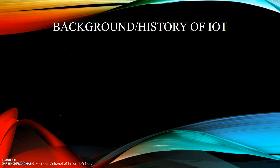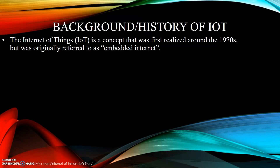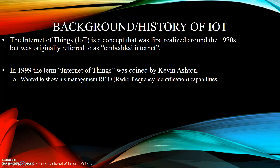Background or History of IoT Technology. The Internet of Things is a concept that was first realized around the 1970s, but it was originally referred to as Embedded Internet. The Internet of Things is an upcoming development of the Internet in which everyday objects are given network capabilities, allowing them to transfer data.